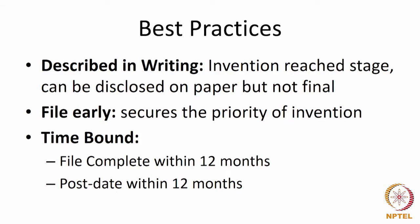In the provisional specification, the invention is described in writing. The provisional is filed when the invention has reached a stage where it can be disclosed on paper, but it is not the final outcome. A provisional is filed when the inventor feels that the claims are not ready. Though the invention may be ready, it may not be the time to draft the claims, or the details of the claims have not come, or the inventor wants to preserve the priority. When the invention has reached the stage where it can be disclosed in writing, that is the point at which the provisional is usually filed.